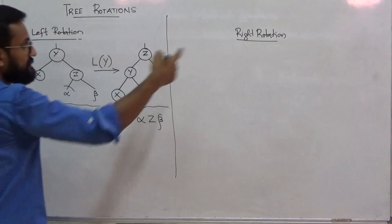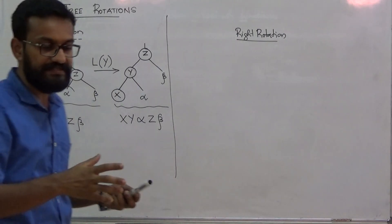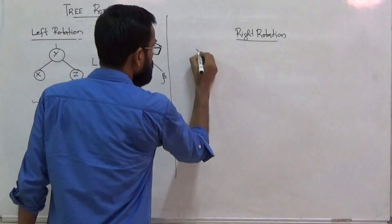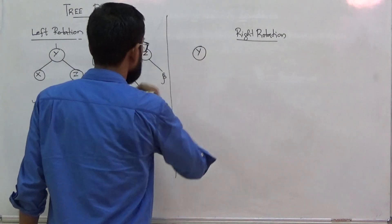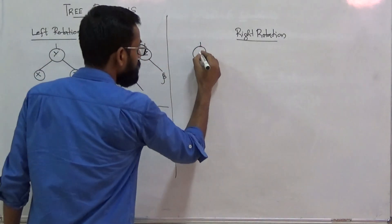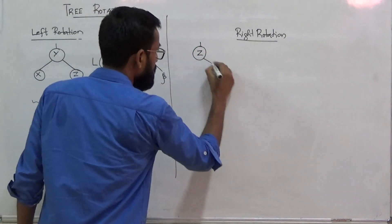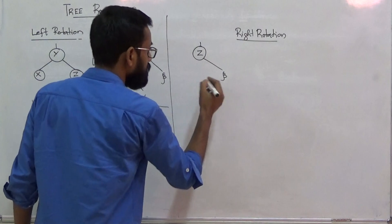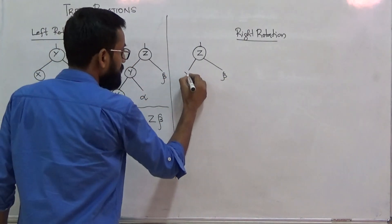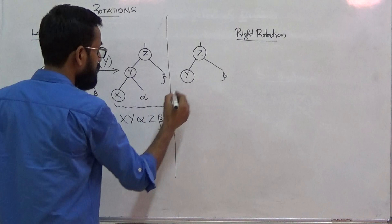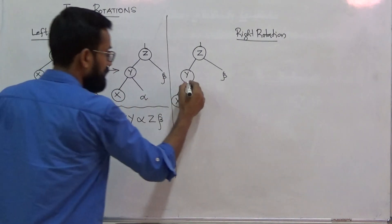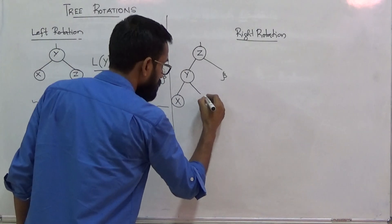Now we can consider right rotation. Right rotation is actually symmetric to left rotation. Consider a sub-tree rooted at z. It has a right sub-tree rooted at beta, and a left sub-tree rooted at y, which has a left child or left sub-tree x and a right child alpha.